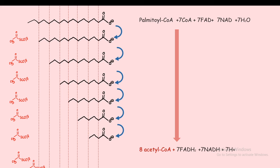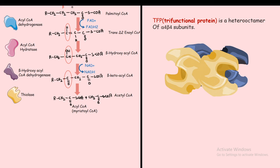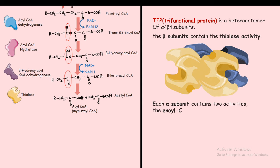All the NADH and FADH2 can be further utilized in the electron transport chain. Strictly speaking, these four enzymes are not individual entities — they form a trifunctional protein complex, a hetero-octamer with four alpha and four beta subunits. The beta subunits contain thiolase activity, and the alpha subunit has dual activity for hydratase and hydroxyacyl CoA dehydrogenase. Any fatty acid greater than 12 carbons is processed by these trifunctional proteins.